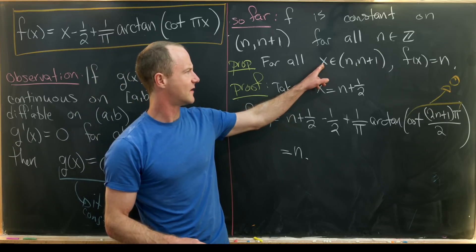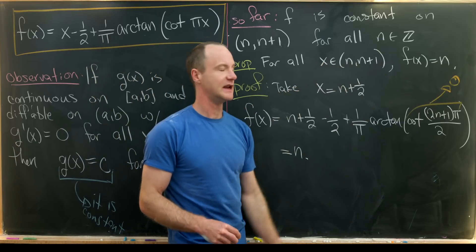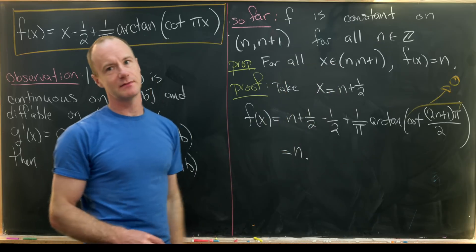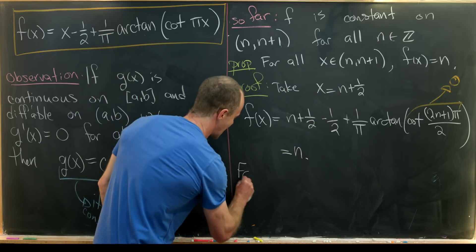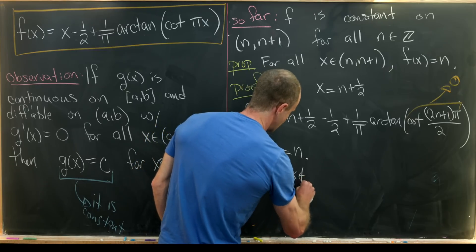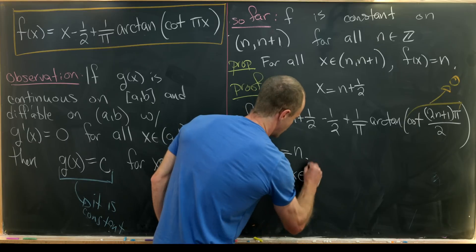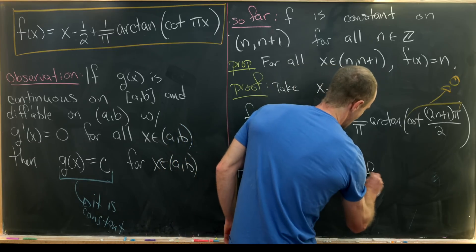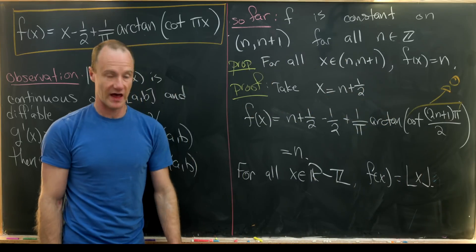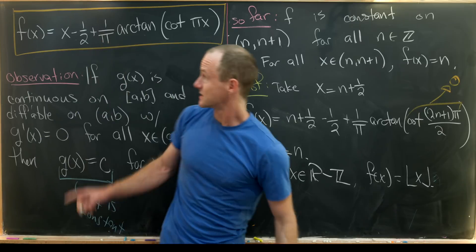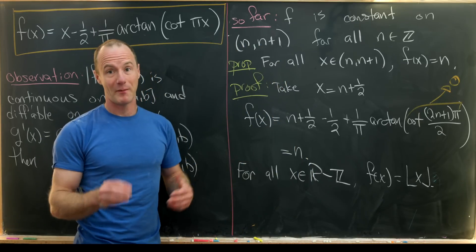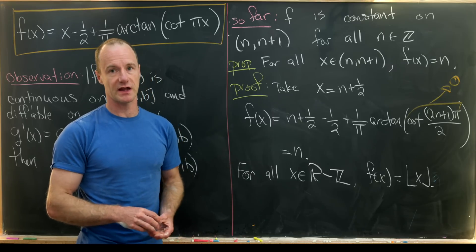What kind of function takes a number between n and n+1 and maps it down to the closest integer? That's the floor function — and that's exactly what we've proven here. For all x in the real numbers minus the integers, f of x equals the floor of x. This doesn't work exactly at the integers, but one could patch those holes if desired. And that's a good place to stop.